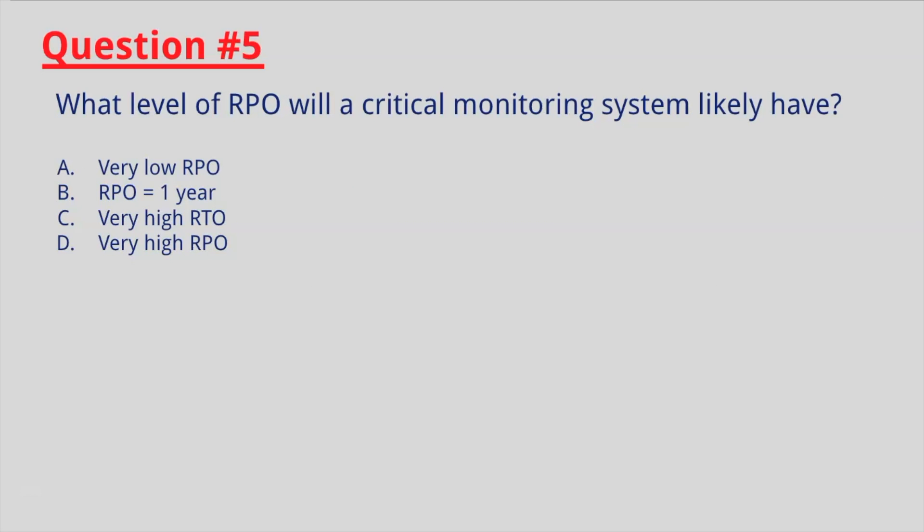Last, question number five: what level of RPO is a critical monitoring system likely to have? If you selected A, you are correct — very low RPO, because critical systems normally have low RPOs. If you enjoyed this video, please like and hit subscribe. I will be posting more content soon. Thank you very much.